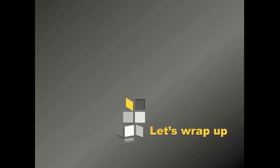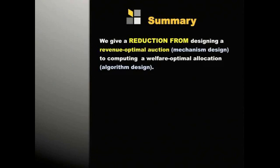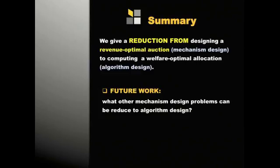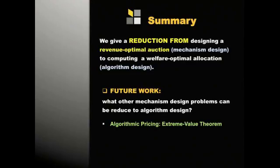To wrap up: I showed a reduction from the mechanism design problem of maximizing revenue to the algorithm design problem of finding a welfare-optimal allocation. This is a general framework, and an interesting future direction is finding other mechanism design problems that can similarly be reduced to algorithm design problems. I also talked about algorithmic pricing, showing an interesting extreme value theorem. I showed how to generalize the min-max theorem to multiplayer zero-sum polymatrix games. And I presented results in online matching. Thank you for your attention.